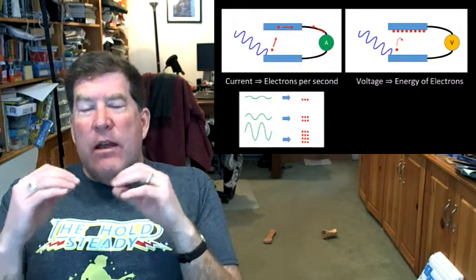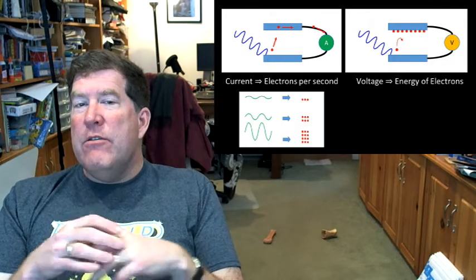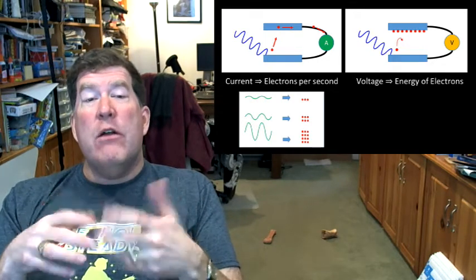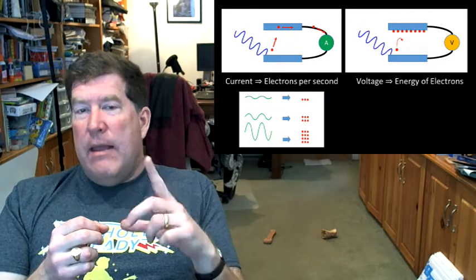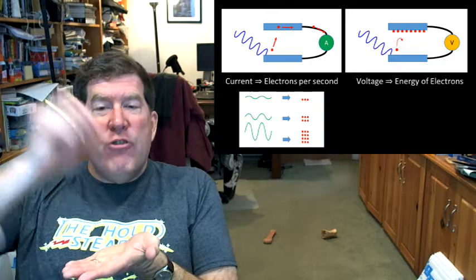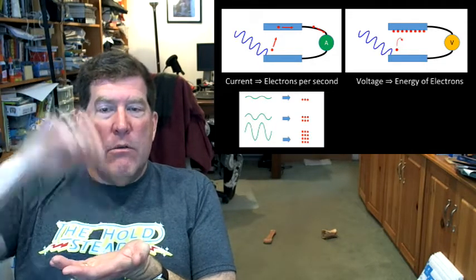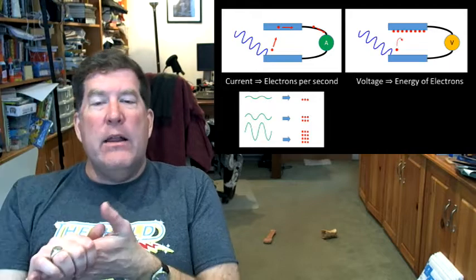The one that's sort of clearest to everybody generally is what happens to the current, the number of electrons per second that are emitted, as you increase the intensity of the light. If you're increasing the intensity, that means you're shaking the electrons harder, making a more violent oscillation.